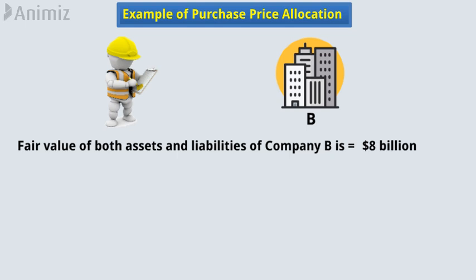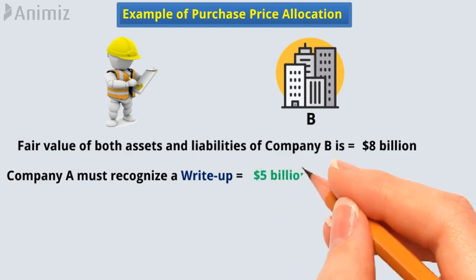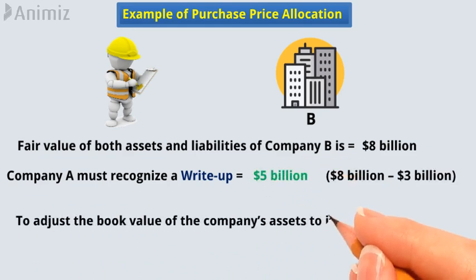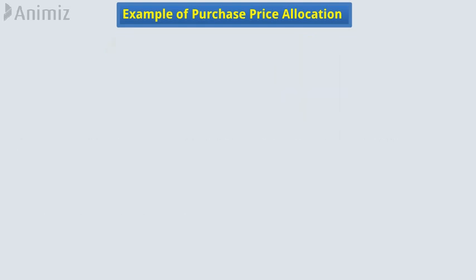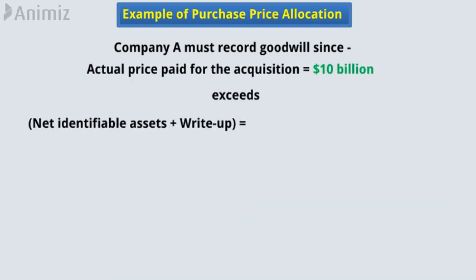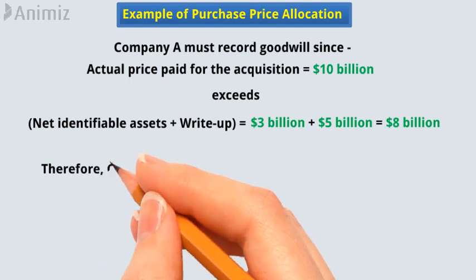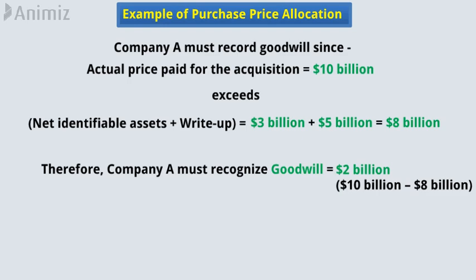This finding implies that Company A must recognize a $5 billion write-up to adjust the book value of the company's assets to its fair market value. Finally, Company A must record goodwill, since the actual price paid for the acquisition exceeds the sum of the net identifiable assets and write-up. Therefore, Company A must recognize $2 billion as goodwill.